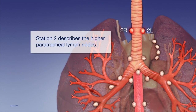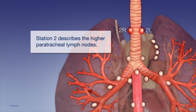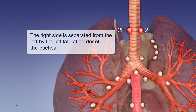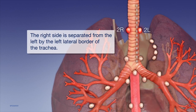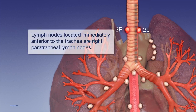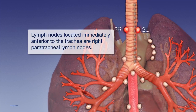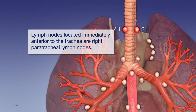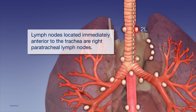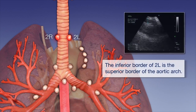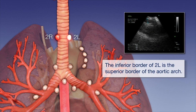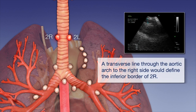Station 2 describes the higher paratracheal lymph nodes. The right side is separated from the left by the left lateral border of the trachea; lymph nodes located immediately anterior to the trachea are right paratracheal lymph nodes. The inferior border of 2L is the superior border of the aortic arch. If you were to draw a transverse line through the aortic arch to the right side, this would also define the inferior border of the 2R station.